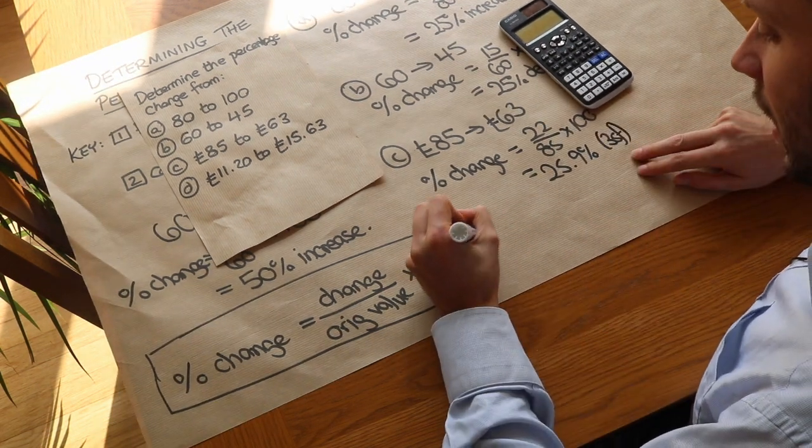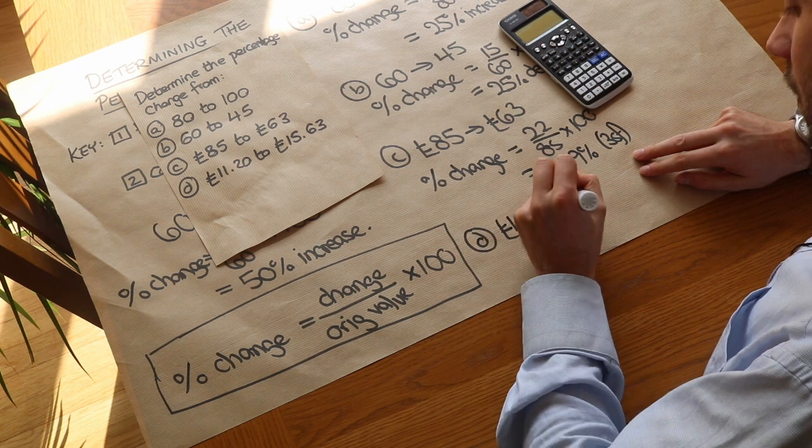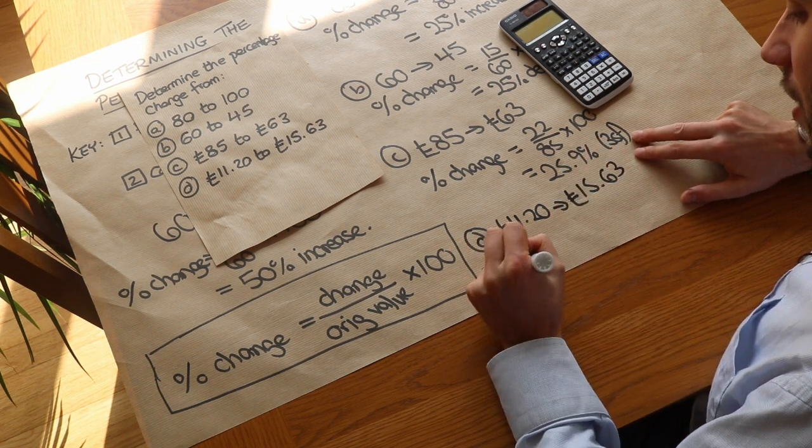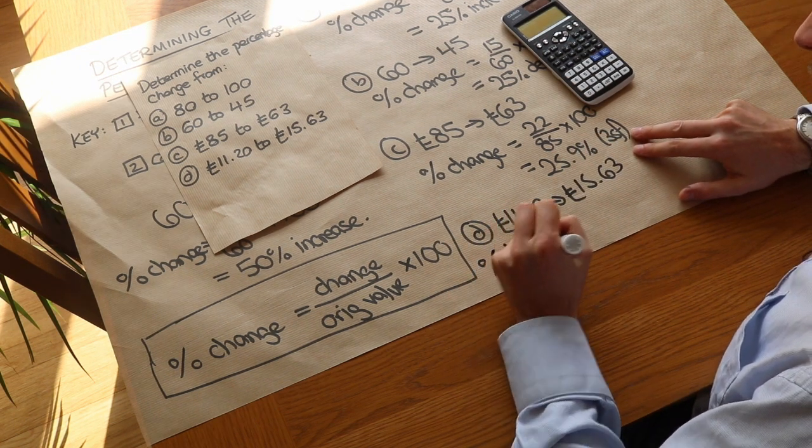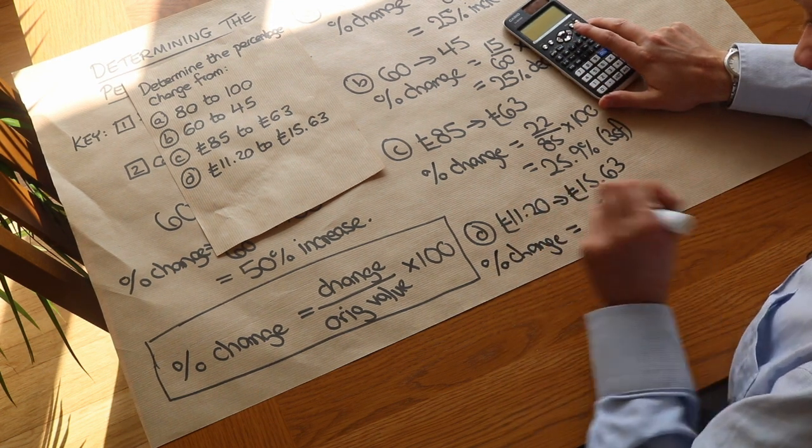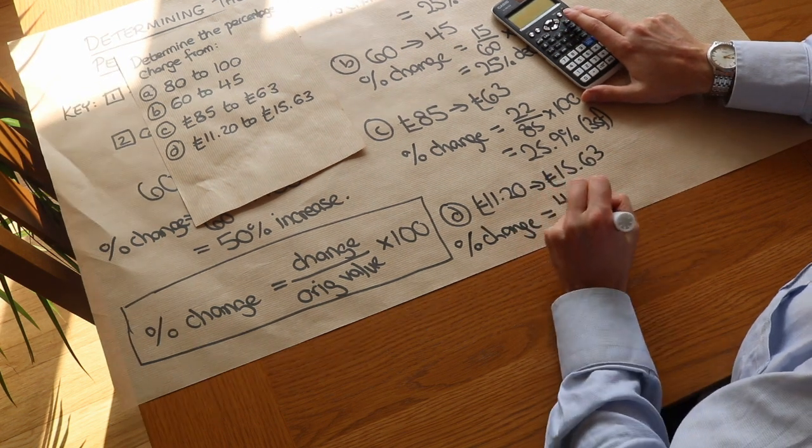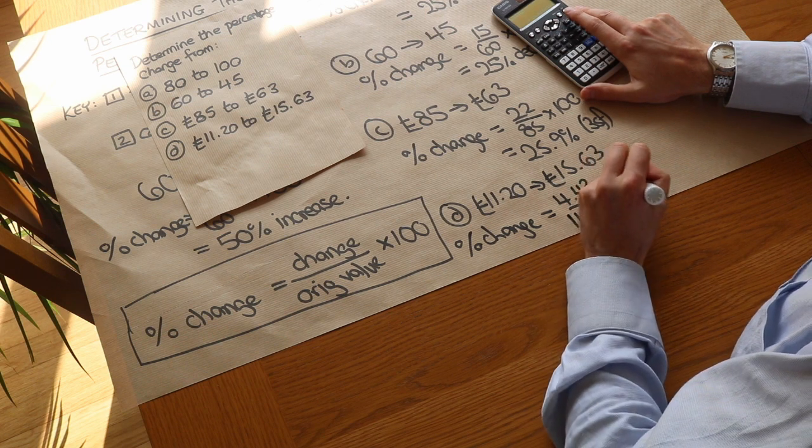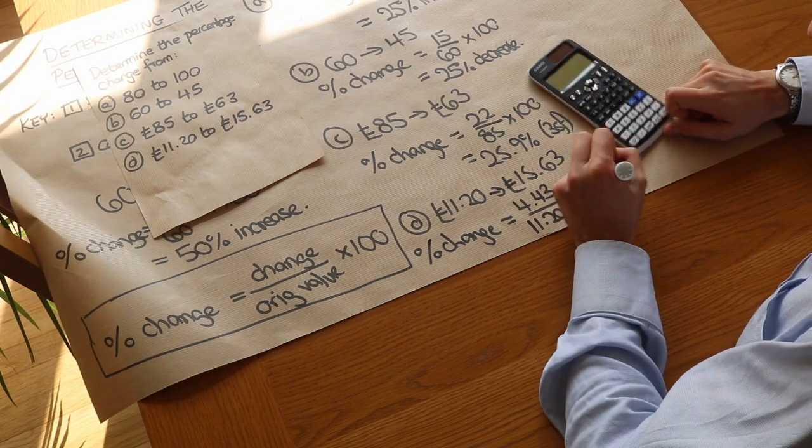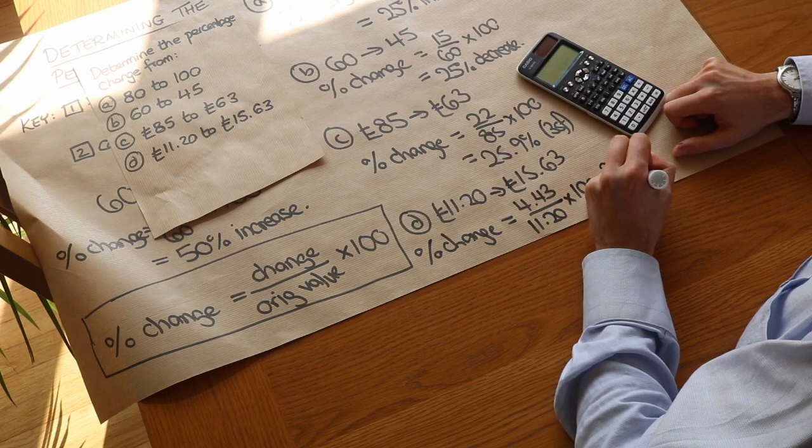And finally we've got D. We're going from £11.20 to £15.63. So the percentage change is equal to the difference - we can see it's going up by £4.43, so 4.43 divided by the original amount, which is 11.20, times by 100. That gets us 39.6 percent increase. So we should state whether it's an increase or a decrease.